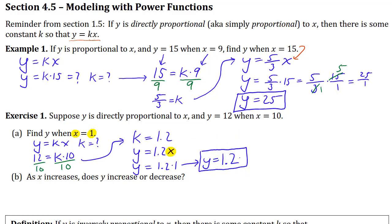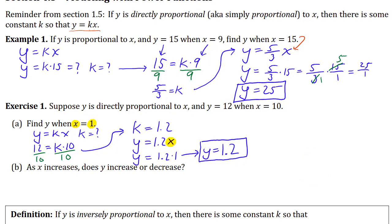Moving on, as x increases, does y increase or decrease? One way to see what this would look like is that you'd have, when x is 0, y would be 0. When x is 1, y would be 1.2. If x is 2, y would be 2.4. We're talking about a line with slope 1.2. Because that 1.2 is a positive number, you can see on the graph that y is increasing as x increases.